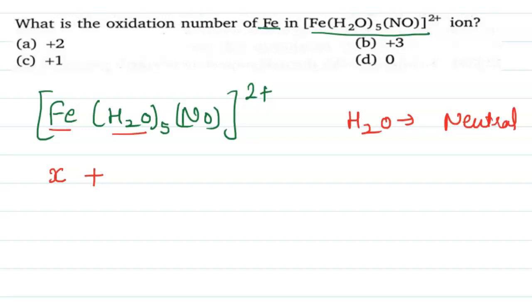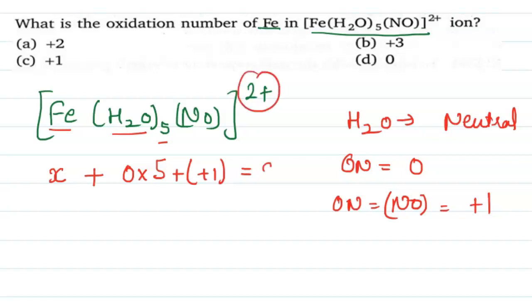A neutral compound has an oxidation number of 0. So here, 0 multiplied by 5 plus the oxidation number of NO equals plus 1. So plus 1 equals the charge on this compound, which is 2.